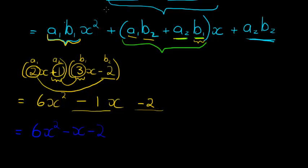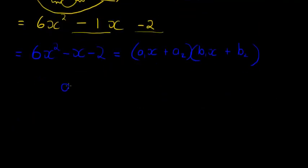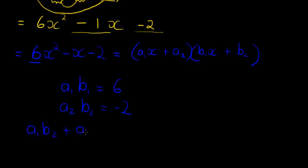Now, this is maybe a confusing step, but in order to factorize this again into two brackets, this formula might just help me find out what A1 must be in front of the X, what B1 must be in front of the X in the other bracket, and what the constant terms in each bracket must be. We know that A1 times B1 must equal 6, and A2 times B2 must equal negative 2. And if I take A1 times B2 and add A2 times B1, I must get this middle term of negative 1.